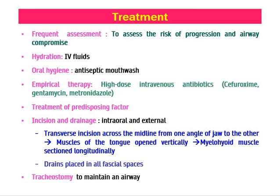Even if the patient has no pus in the oral cavity or neck, they will be very stressed, so adequate respiratory support is essential. Incision and drainage may be intraoral or external. Intraoral drainage can be done from the dental area — if the tooth is extracted, pus drains through the tooth socket or through the floor of mouth. External drainage is made via a transverse incision along the midline from one angle of the mandible to the other. The muscles of the tongue are opened vertically, the mylohyoid muscle is sectioned, and drains are placed in all fascial spaces.